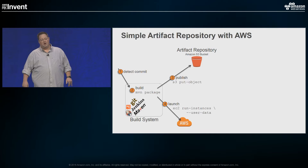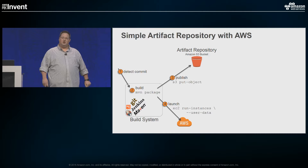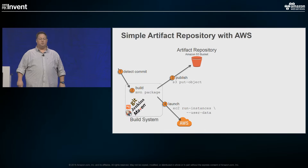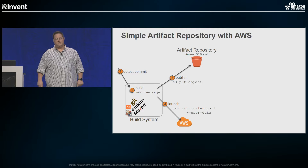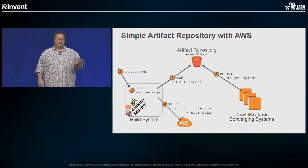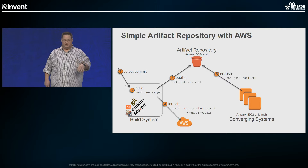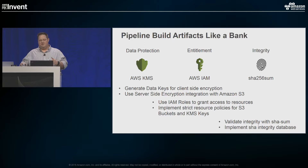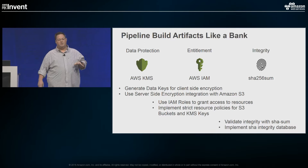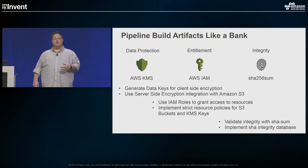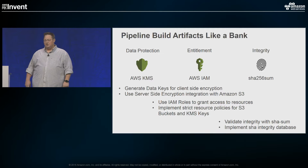We launch our EC2 instances with an EC2 API call. In this example, we pass in user data — characters passed into an instance at launch so it can reference them. It will refer to a URL to the S3 object, and our converging systems will retrieve the S3 object with a get-object call. It's a very common pattern for publishing build artifacts in a continuous delivery system. But we're going to take it to the next level — S3 is a great product, but we're a bank and we care about strong security, so we're going to implement three different ways to make our simple artifact repository very secure.